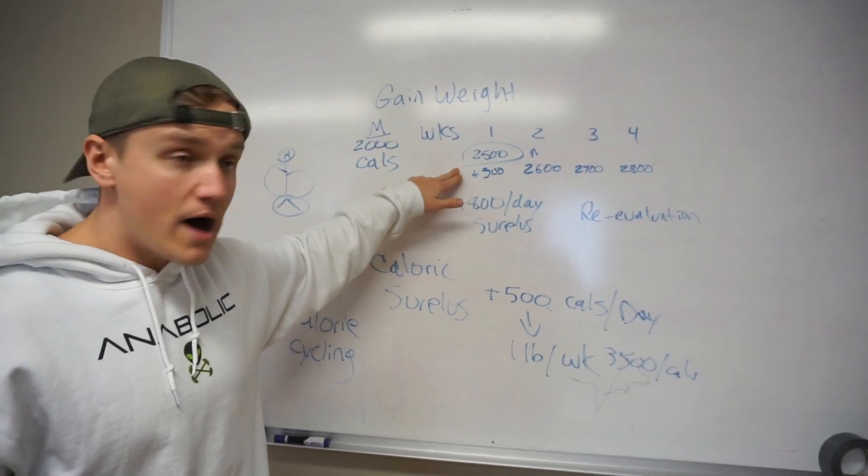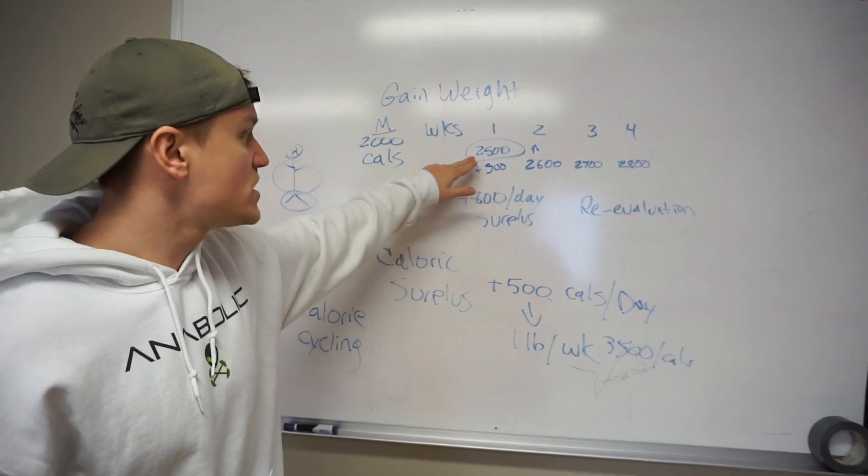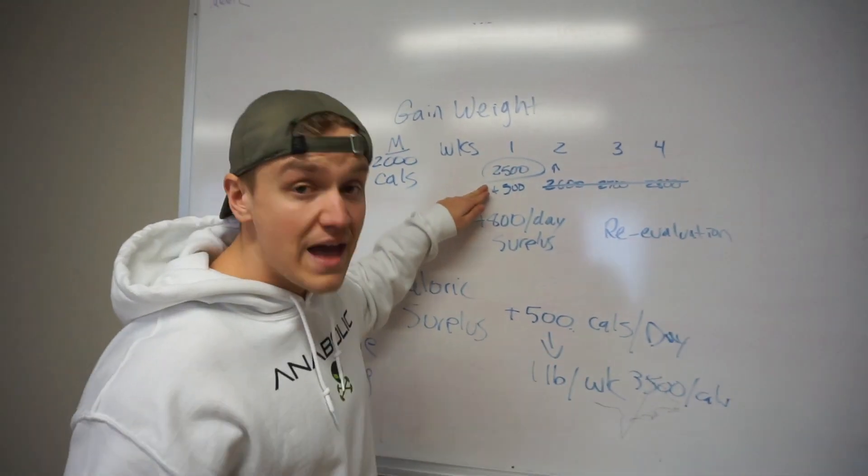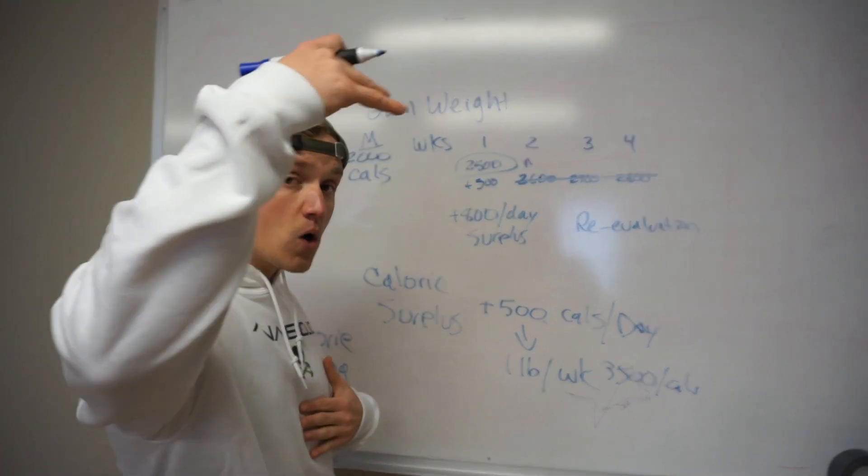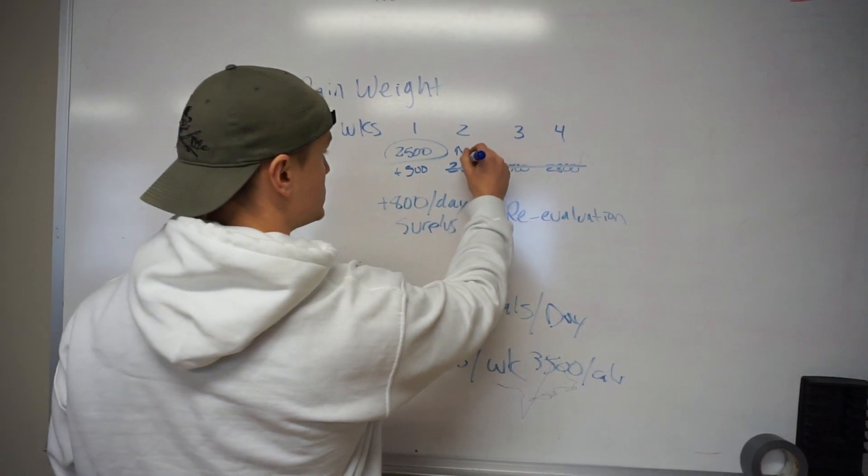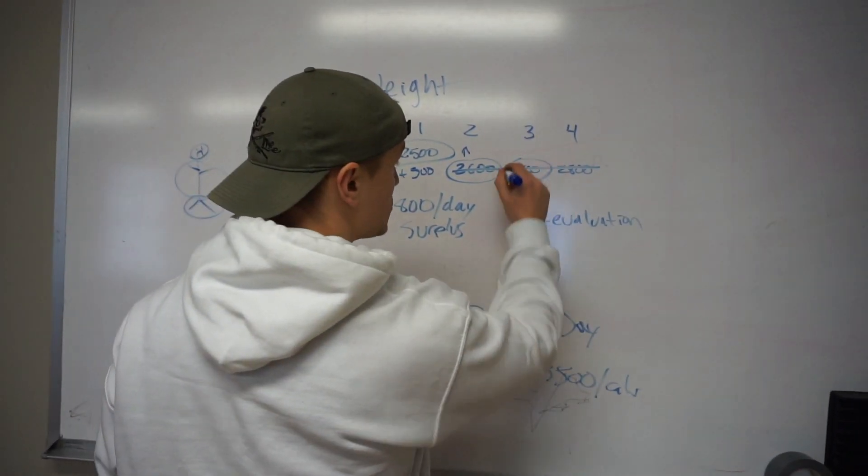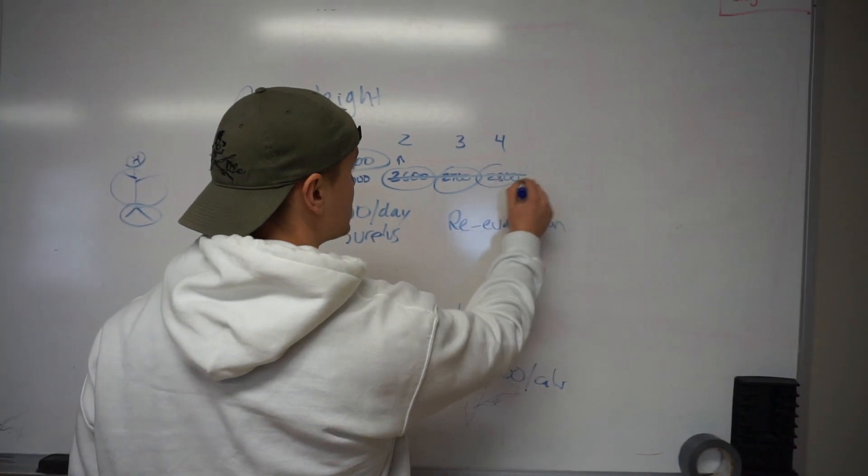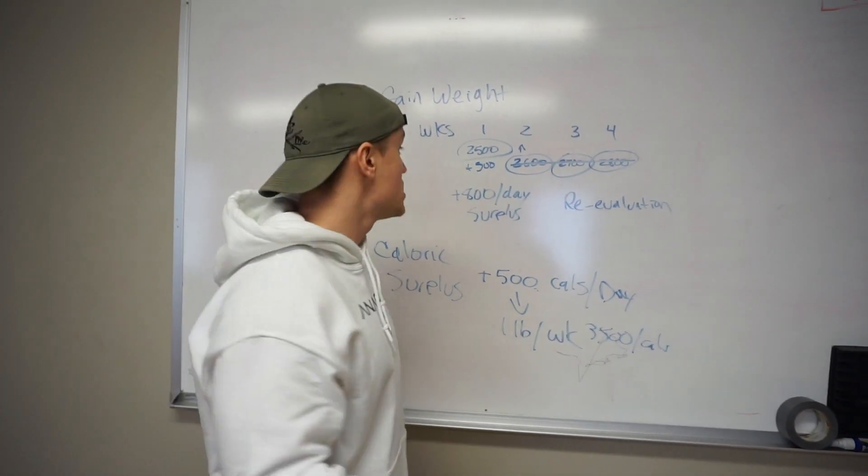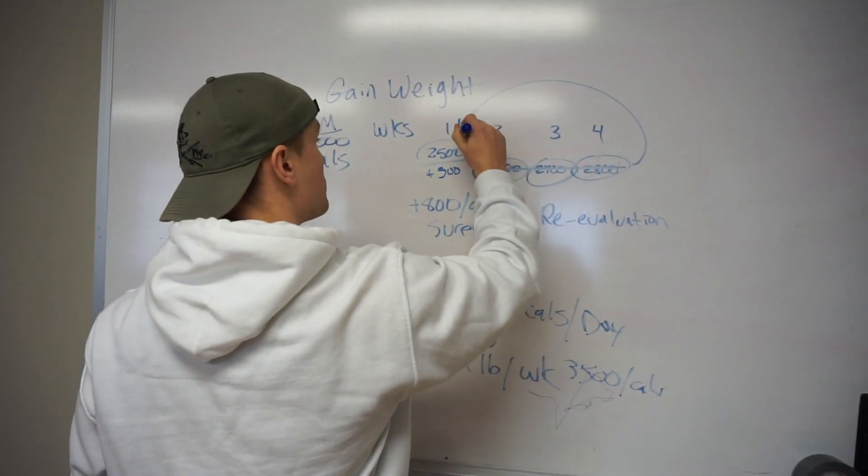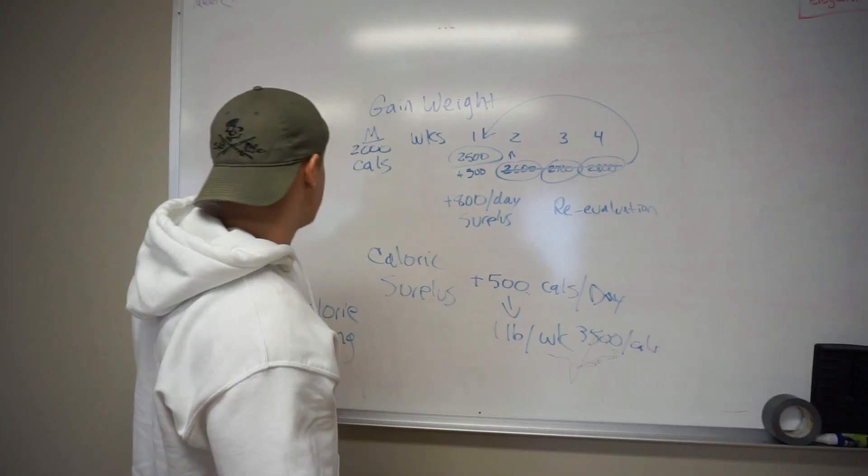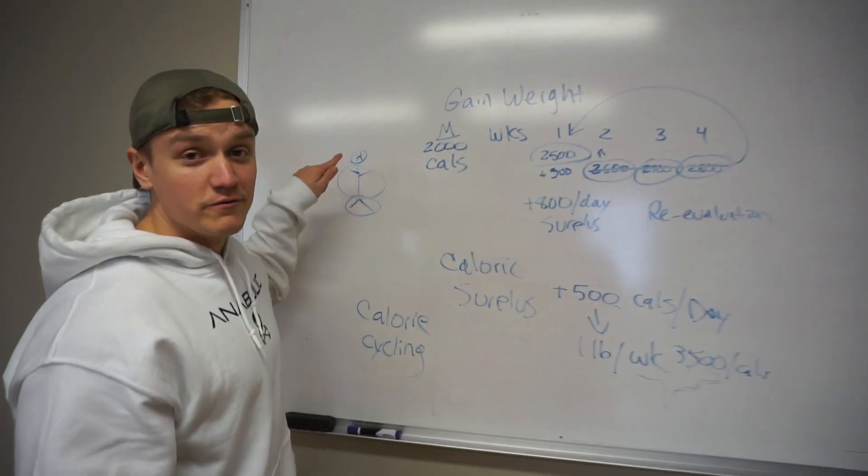If you're in a 500 a day surplus and you only gained a half pound per week, then you increase. But if you're already gaining a pound per week off that 2,500 calories, there is no need to increase. You just keep eating this. But then once you plateau, that scale says you don't gain a pound per week, now you increase. But the second you start gaining too much weight, you need to go back down. Because if you're gaining a lot of weight, chances are you're also gaining a lot of fat.